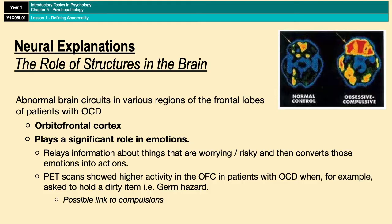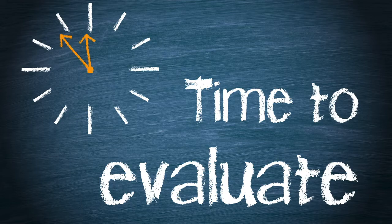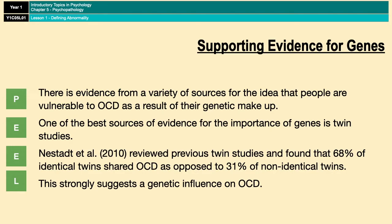Now for a couple of evaluation points. First, there is supporting evidence for the role of genes in OCD: research reviewing previous twin studies found that 68% of identical twins shared OCD, as opposed to 31% of non-identical twins. It's not a massively complicated study, but the fact that it is research makes it very useful to use in an essay.